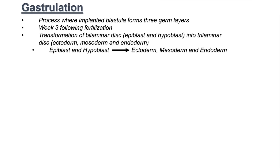So gastrulation is a transformative process where epiblast and hypoblast cells and their layers will eventually become ectoderm, mesoderm, and endoderm. This lesson will be talking about the steps whereby this process occurs.